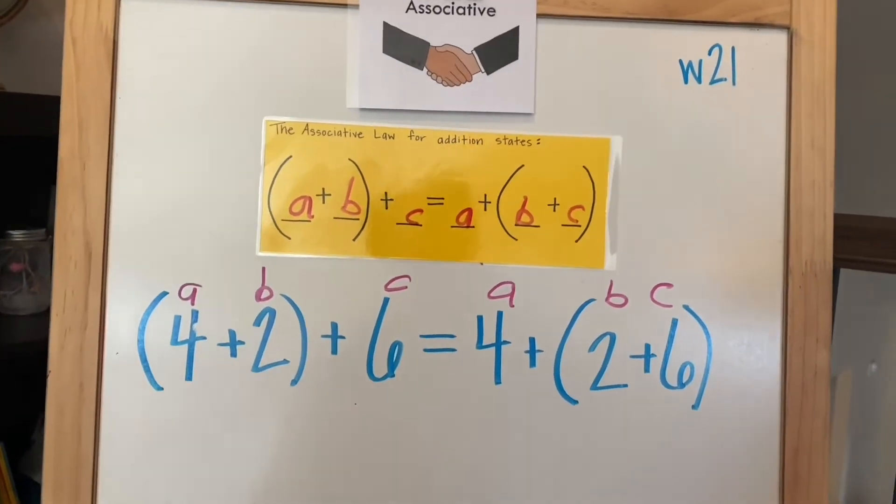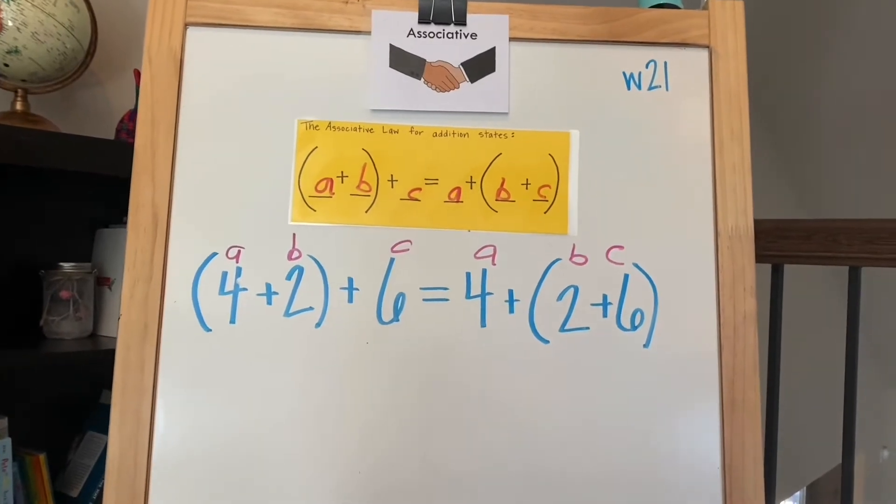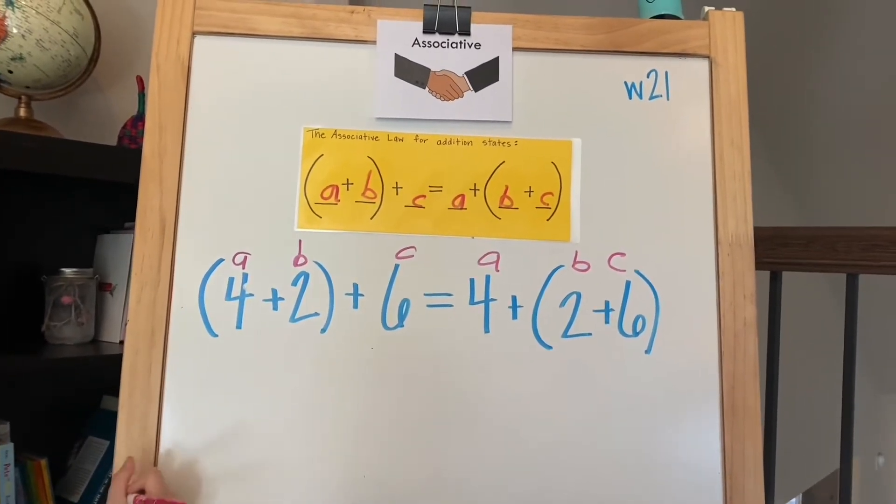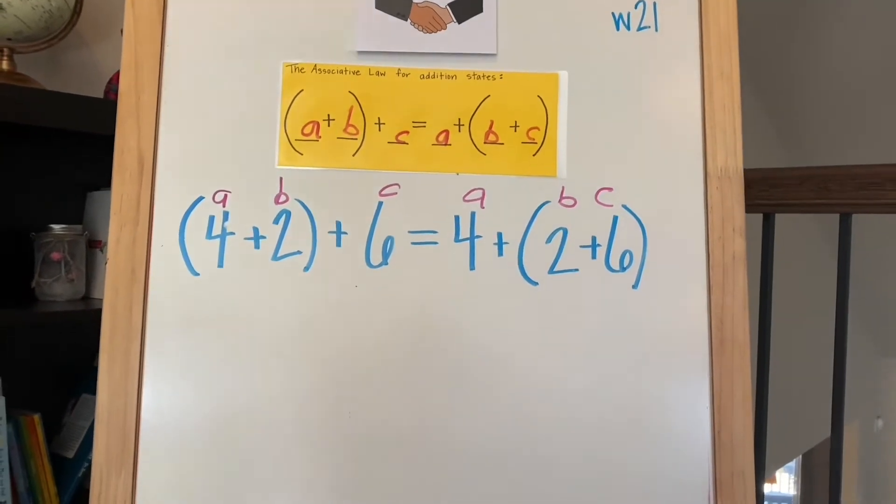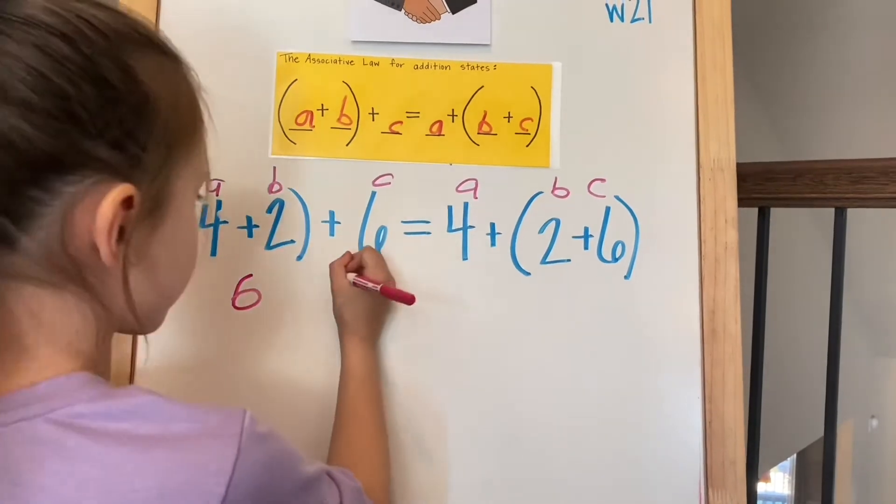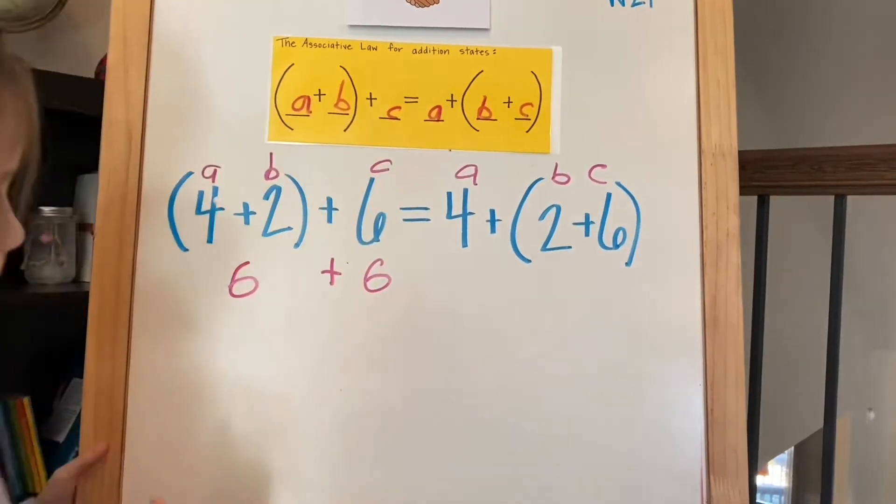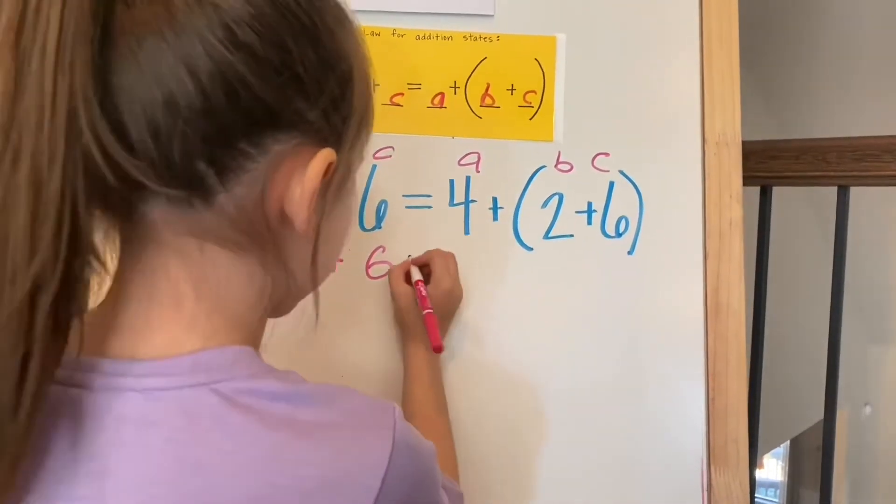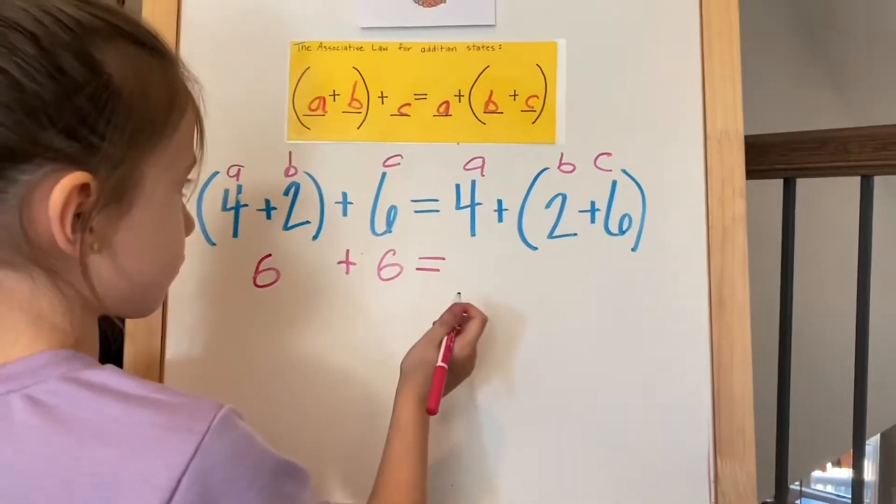All right, let's solve this. We always want to do our parentheses first, according to our order of operations. What does 4 plus 2 equal? Good. Bring down that equal sign. Now start with the parentheses on the other side. What do we have over there?